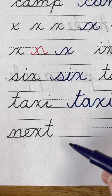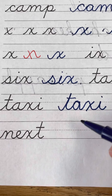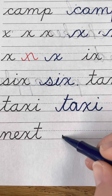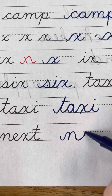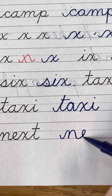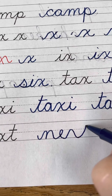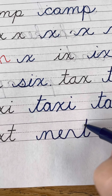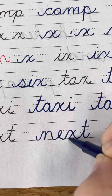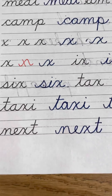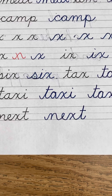The last one is next. Remember, an N only has two humps. N, E, X, T. There it is. And there is the bottom of day 12 for your X's.